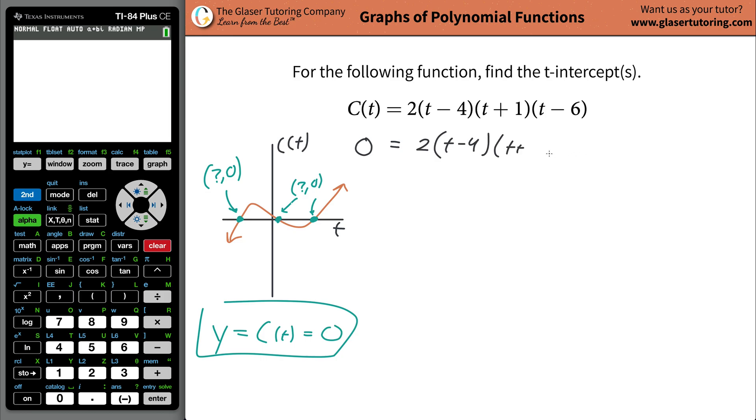T minus four, T plus one, T minus six. Now if you just think about this, the only way that this whole right hand side is going to become zero is with a few conditions.